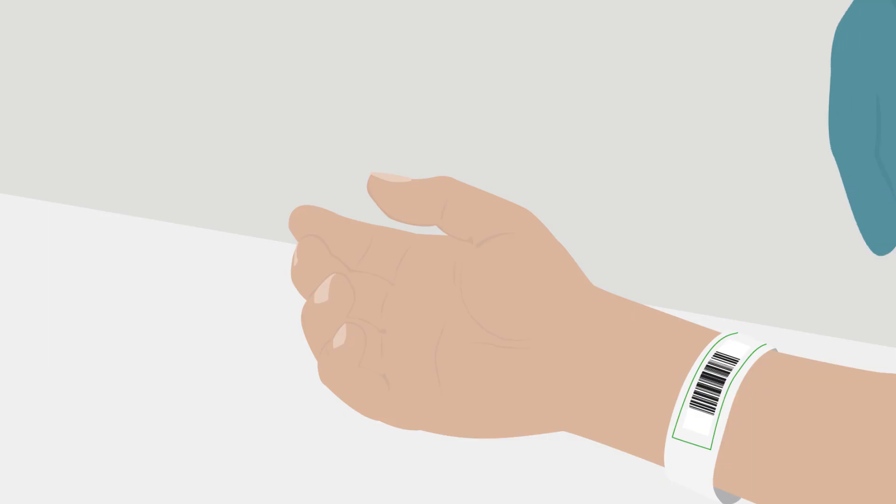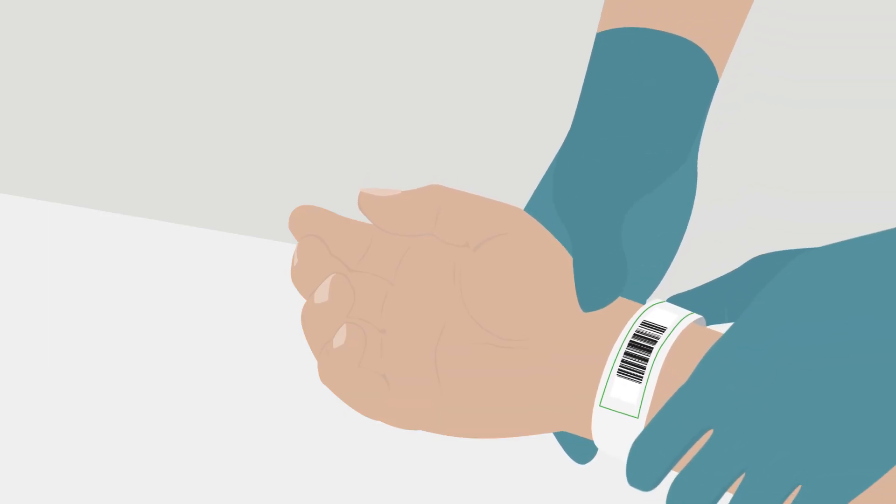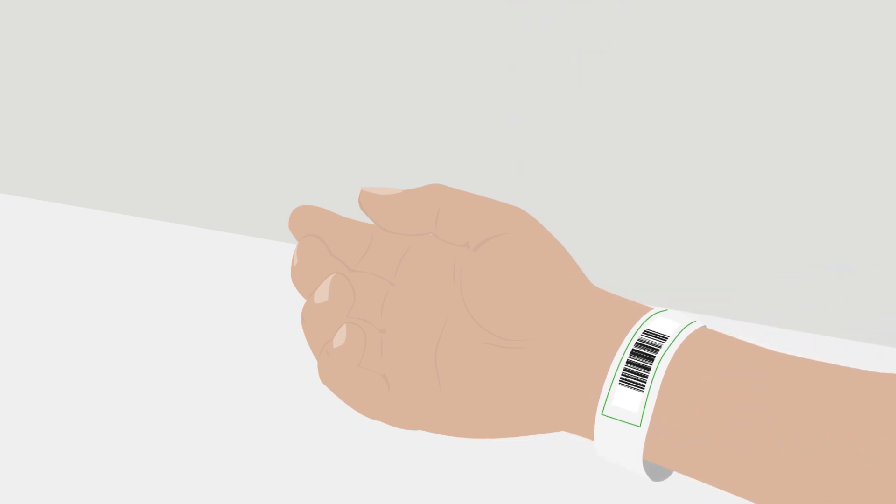Before performing the arterial puncture, confirm the patient's identity. If a recent change in the oxygen flow rate has been made, wait approximately 20 to 30 minutes before sampling. Then locate the radial artery.